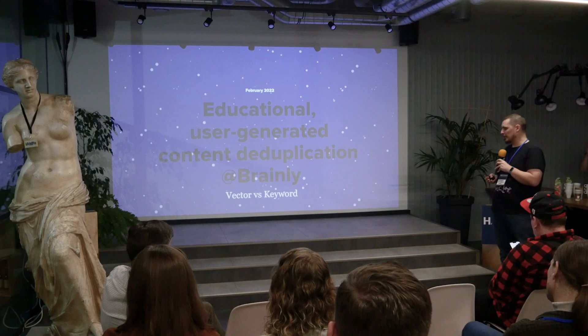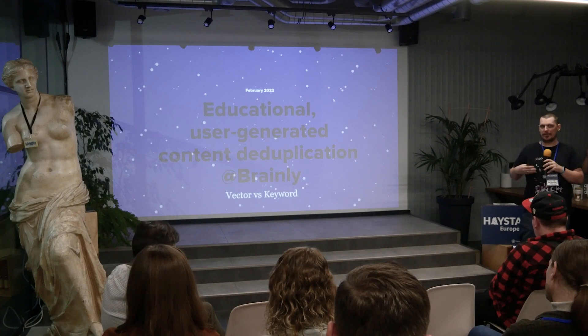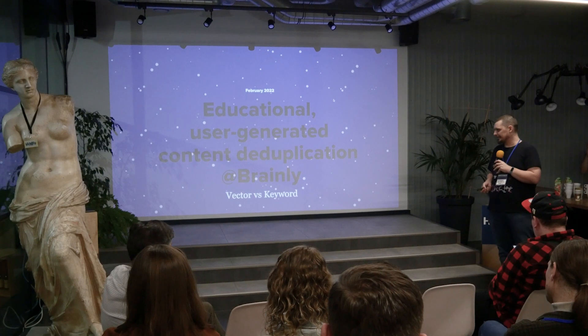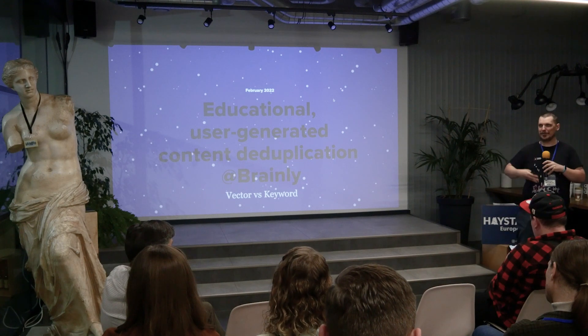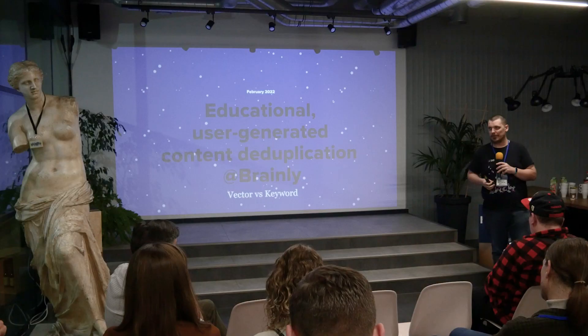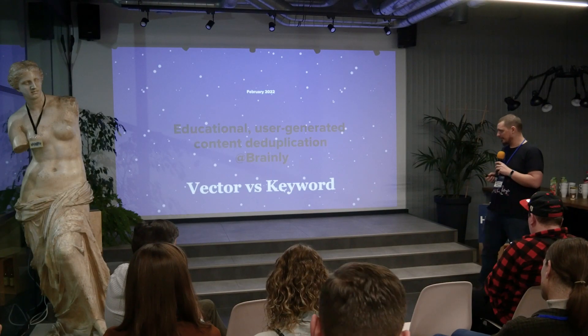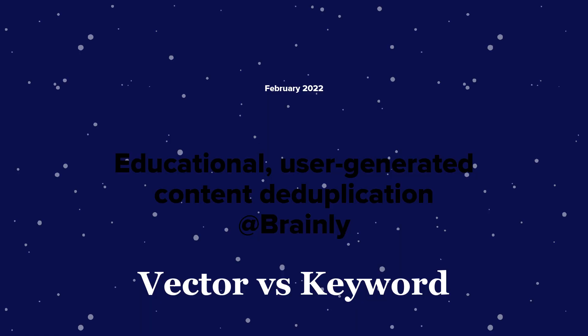We knew early on what we needed — to deduplicate the content we already have. We have a huge amount of very valuable data. The reason I'm speaking at this particular place, which is about search, is that we treat deduplication as a search problem. Duplication is basically finding exact matches. What does exact match mean? That's up for debate, and we actually changed the definition at some point. So first of all, it's about a vector versus keyword approach to find those duplicates in our dataset.